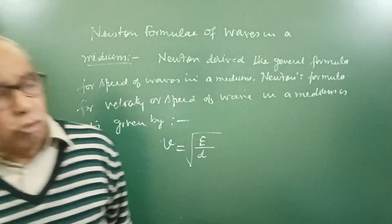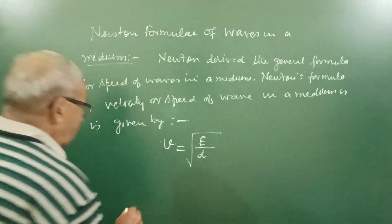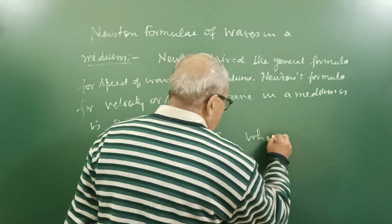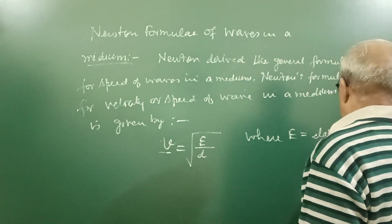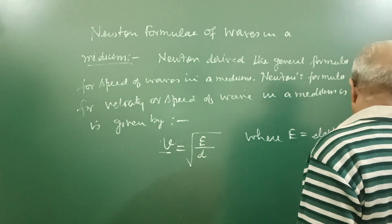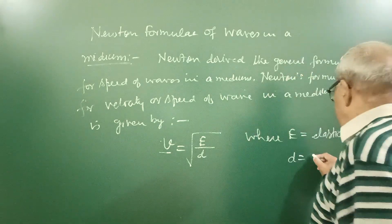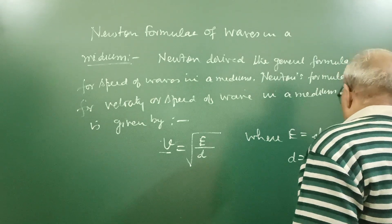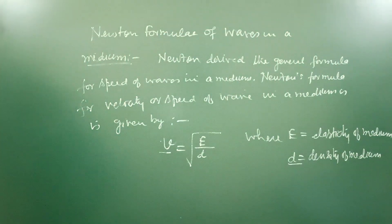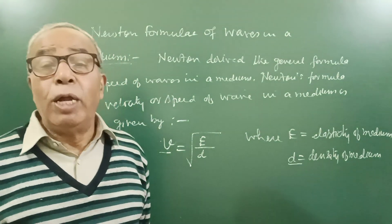He did not only derive for velocity of sound wave, he took wave as a general thing, where v equals square root of e by d. Here v is speed of wave, where e equals elasticity of medium. And d is density of medium. Now you understand. Gas has very low density with respect to liquids and density of liquids may be nearly equal to solids, less than or more than, because wood has lower density than water.